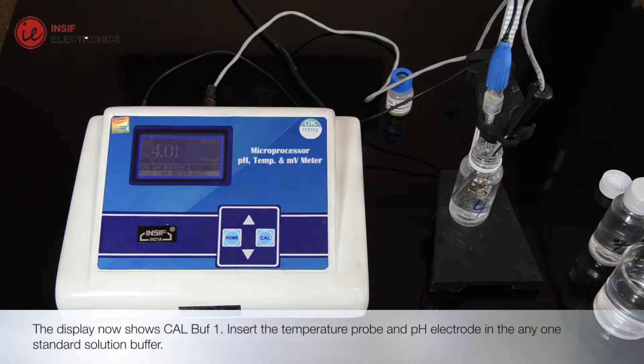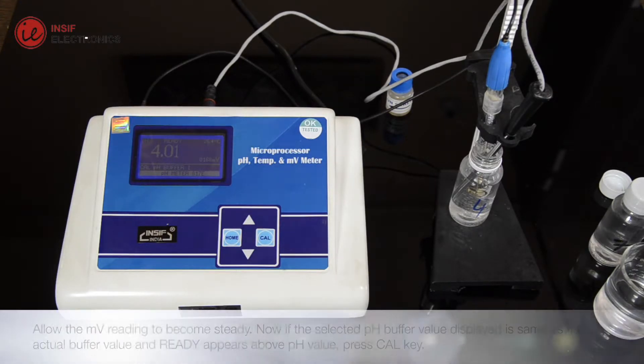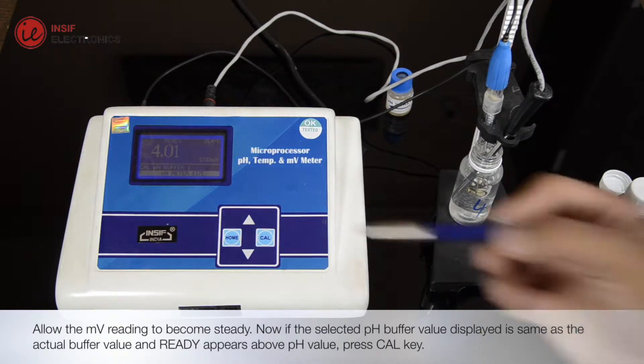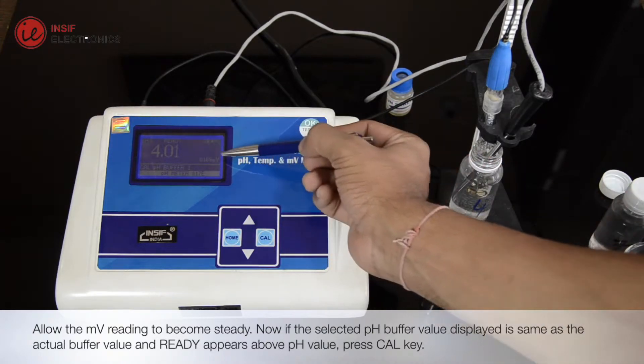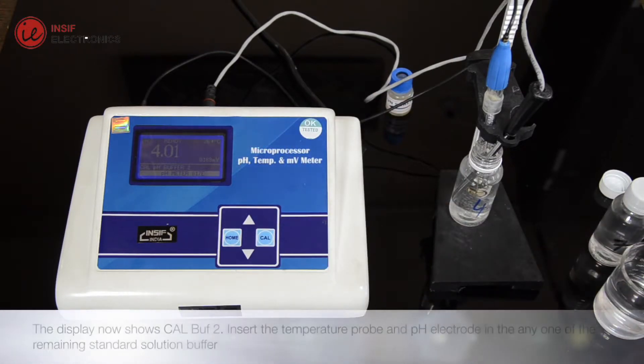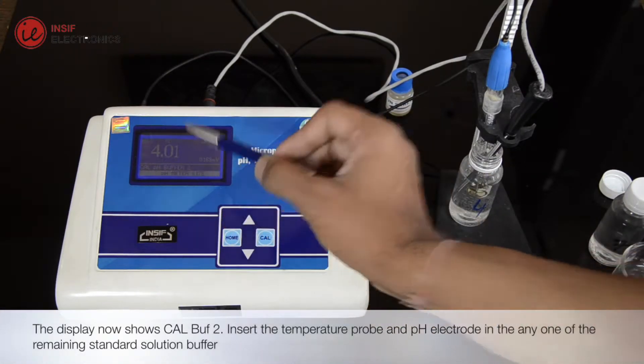Insert the temperature probe and pH electrode in the NE1 standard solution buffer. Allow the MV reading to become steady. If the selected pH buffer value displayed is same as the actual buffer value, and ready appears above pH value, press Cal key. The display now shows CalBuff2.